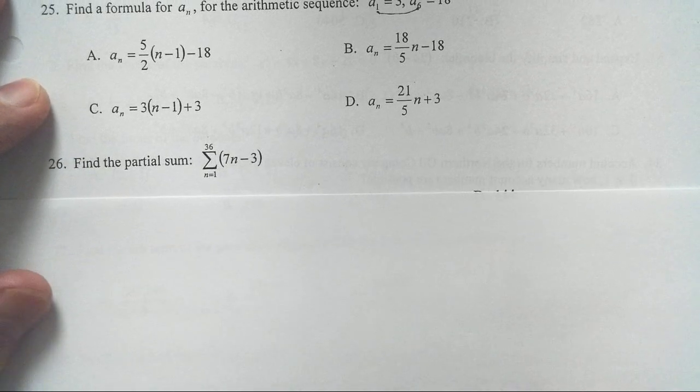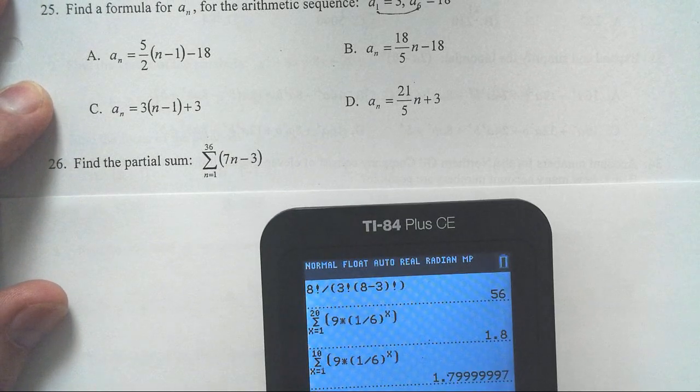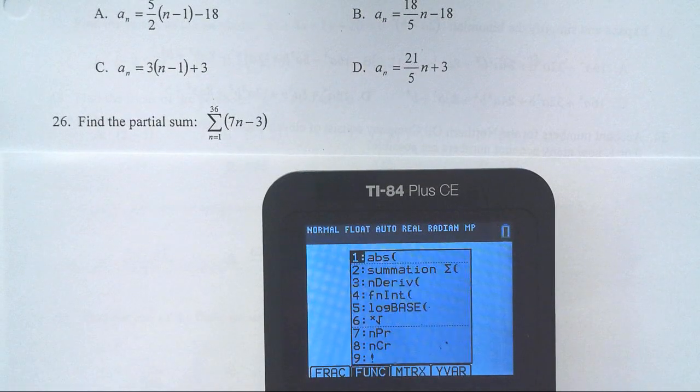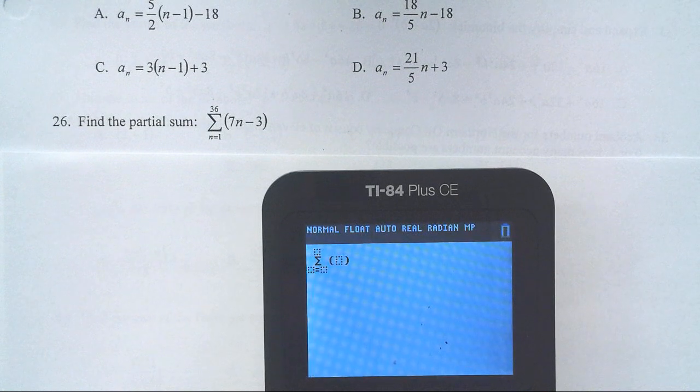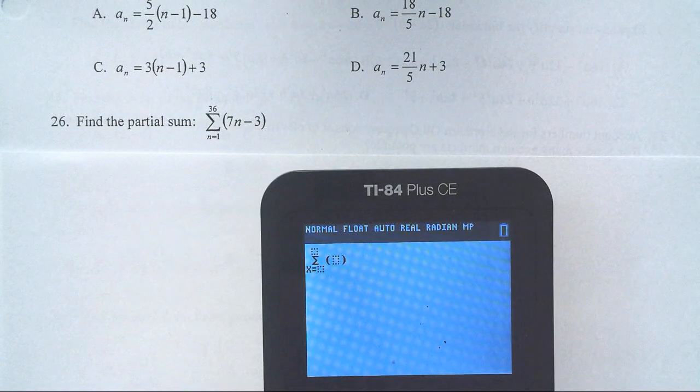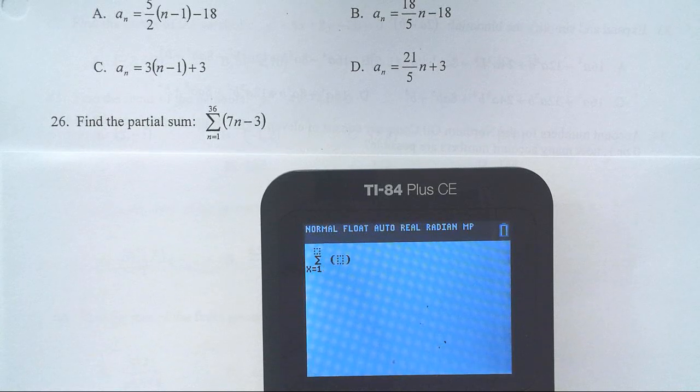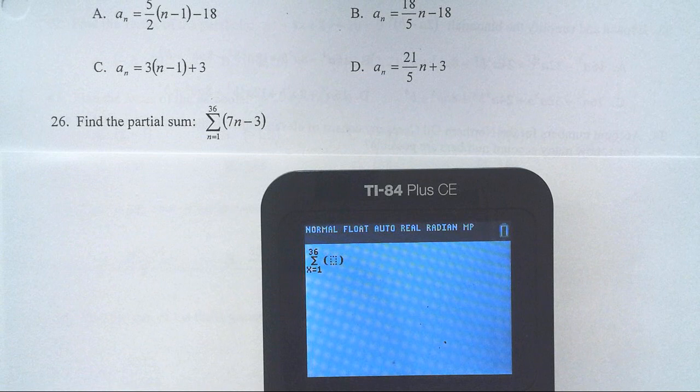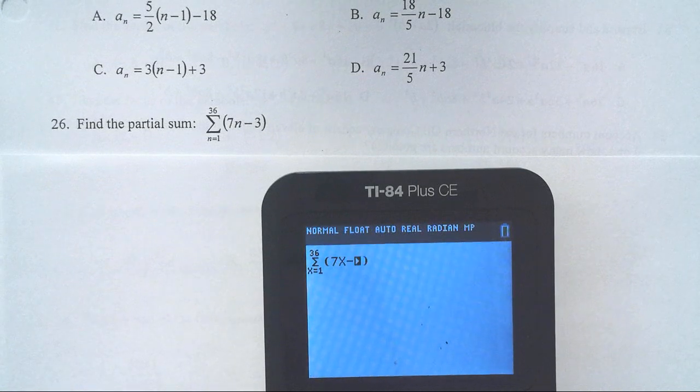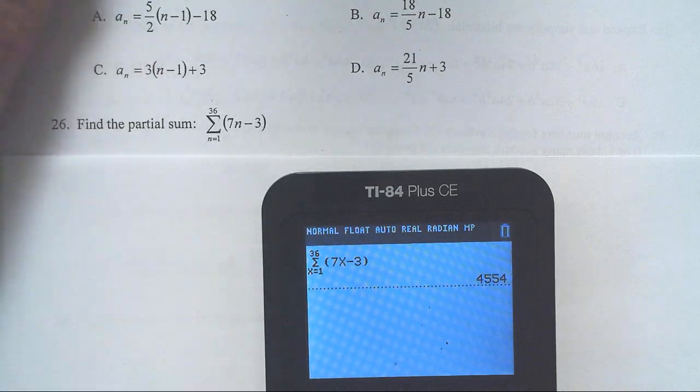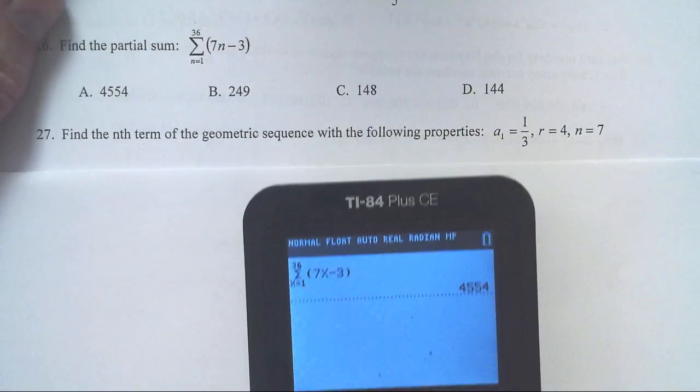Find a partial sum. This is most definitely calculator friendly. So I'm going to go alpha window, get my summation, have x go from 1 to 36 as we have 7x minus 3. That's a definite hug your calculator moment, 4,554.